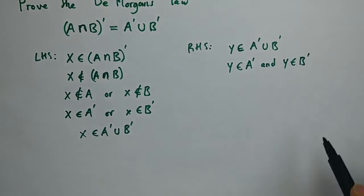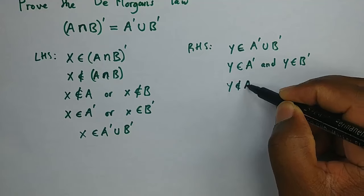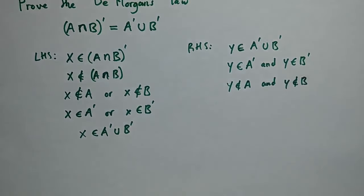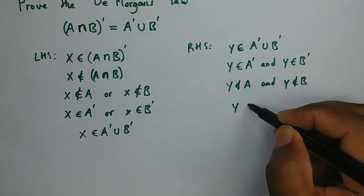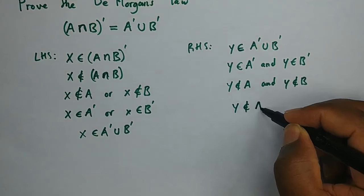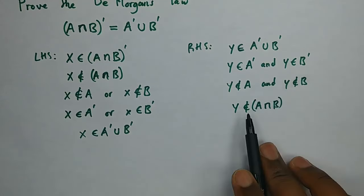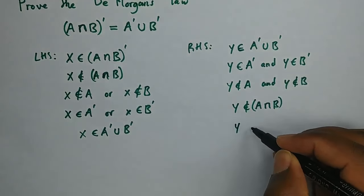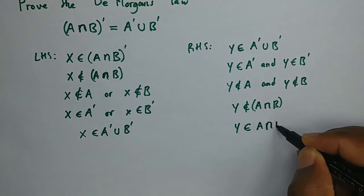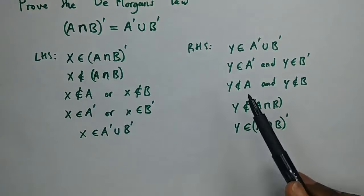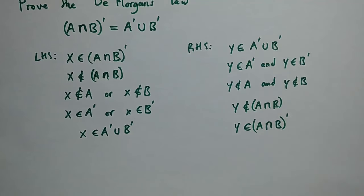y is also a member of B'. If it's a member of the complement, then we know it's not a member of A, and y is not a member of B. Because of 'and', we say y is not a member of A∩B. Since it's not a member of A∩B, then y is a member of (A∩B)'. We have shown that the left is equal to the right and the right equals the left.